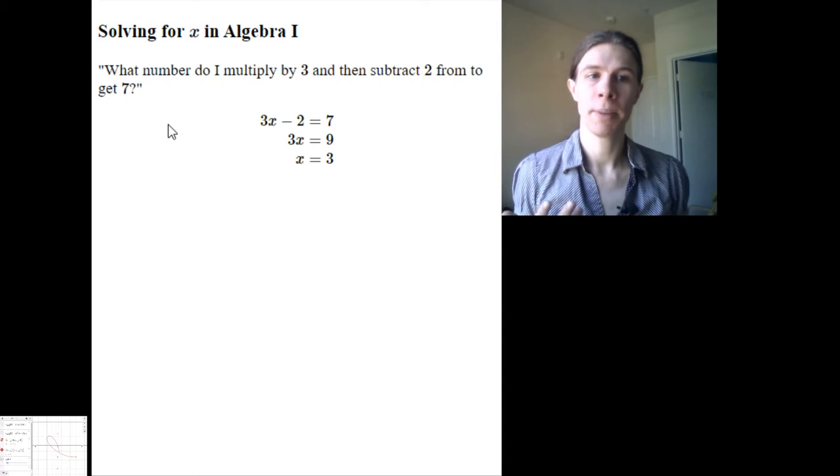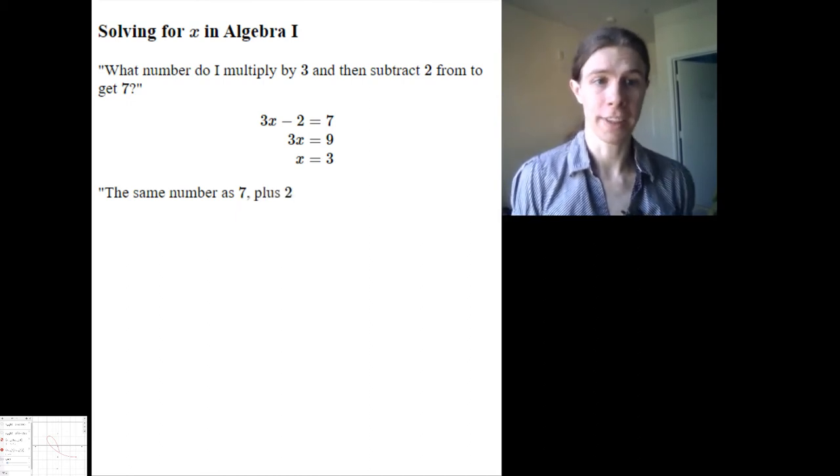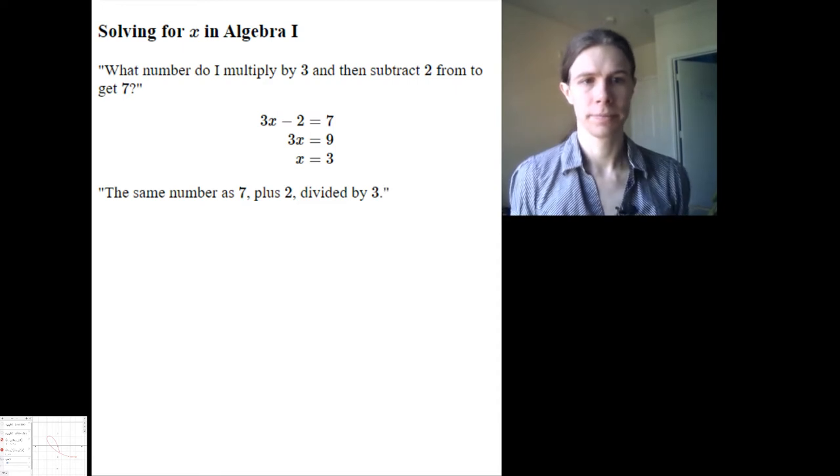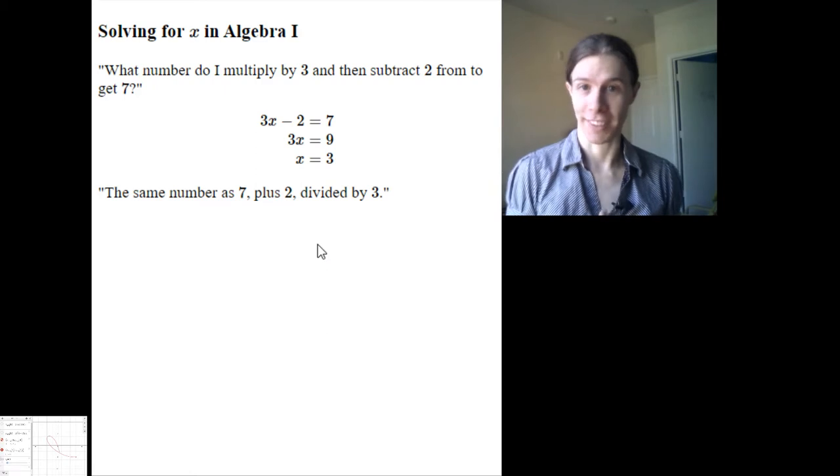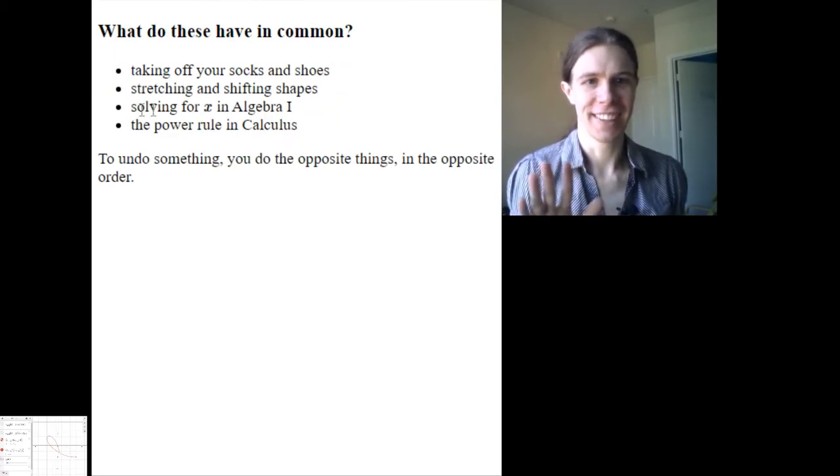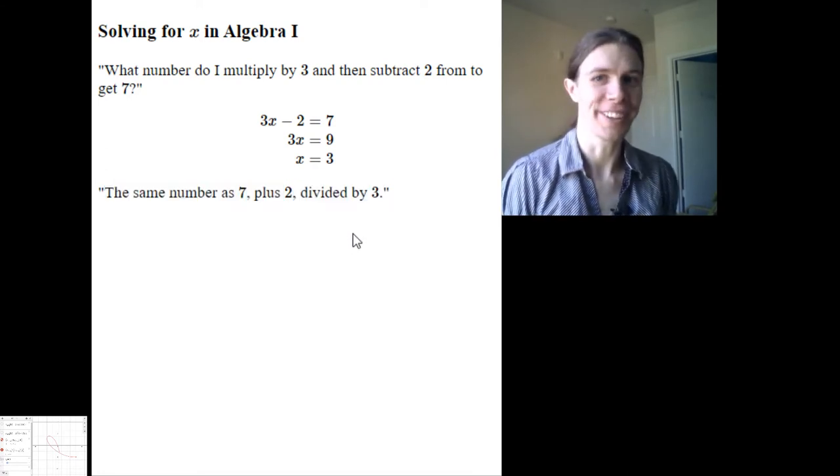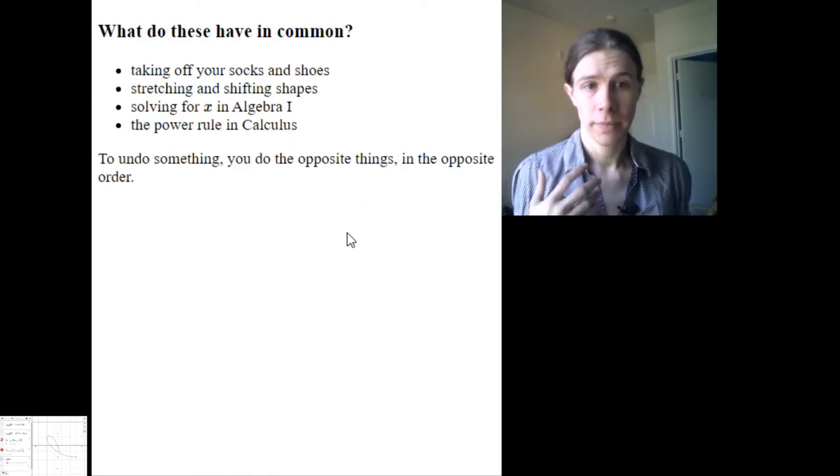Same thing over here. What number do I multiply by 3 and then subtract 2 from to get 7? The same number as 7 plus 2, we're doing the opposite of this thing first, divided by 3. Undoing that second. 7 plus 2 is 9, divided by 3 is 3. It's the same thing. And so, you could have actually been doing algebra entirely in words using just this logic, just this, to undo something and do the opposite things in the opposite order. And if it had been expressed in words at the start, you just say the opposite words in the opposite order, and it works. So, ta-da! There's a connection between taking off your socks and shoes and solving for x in Algebra 1.